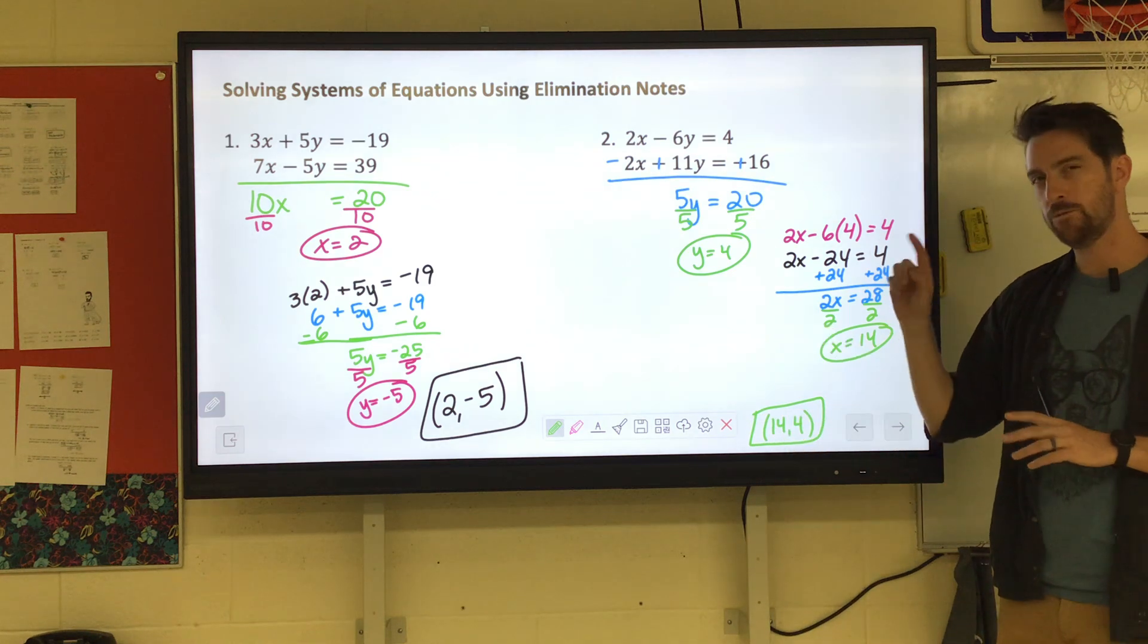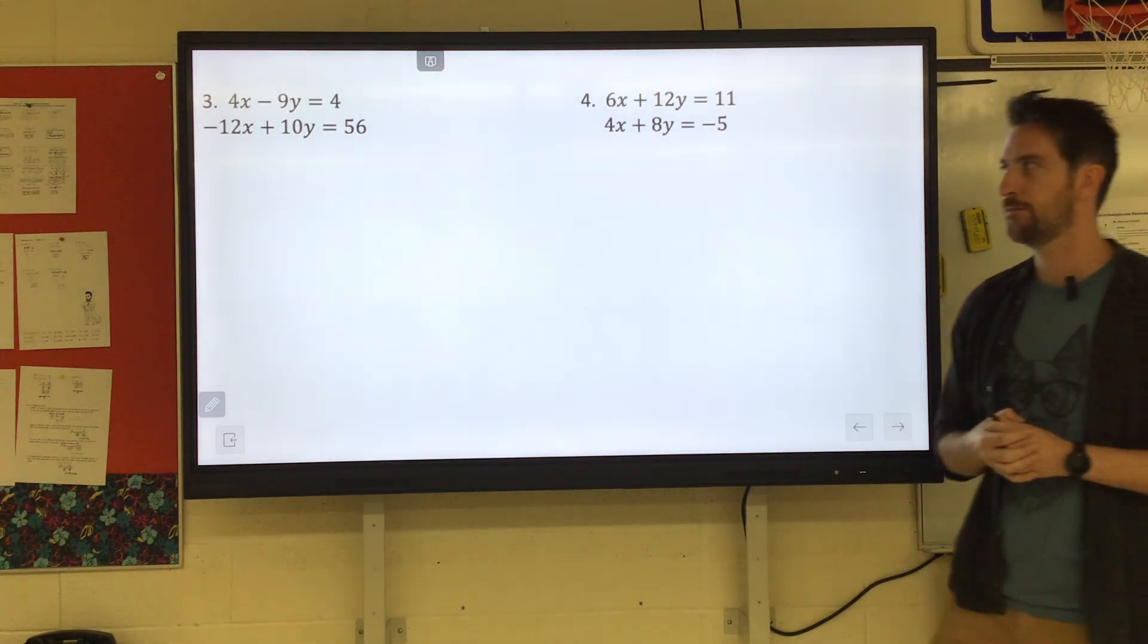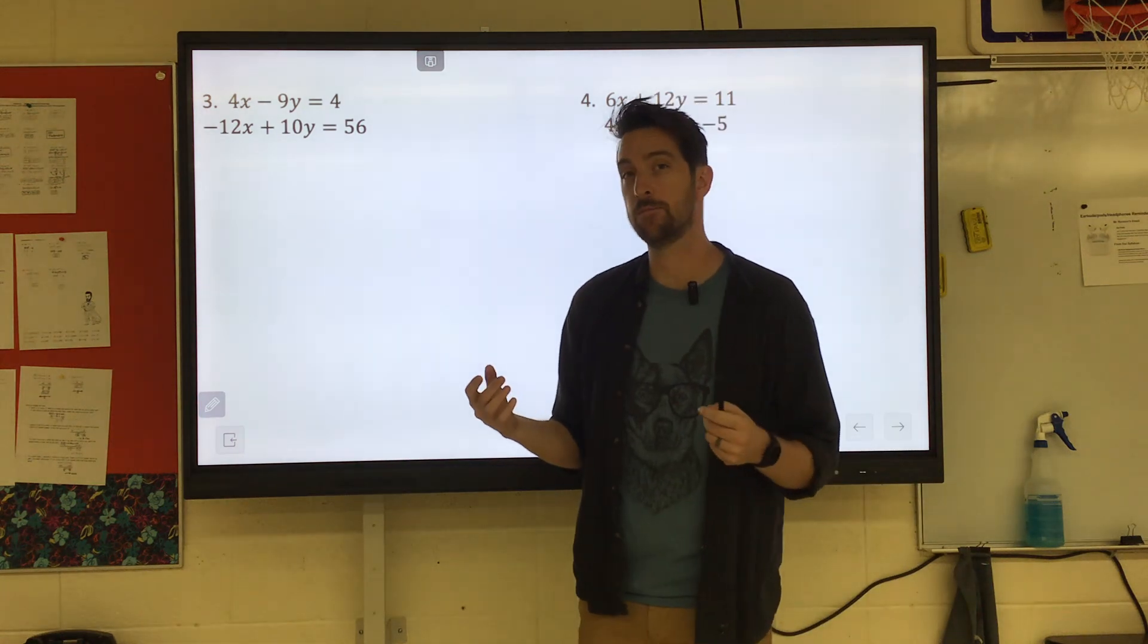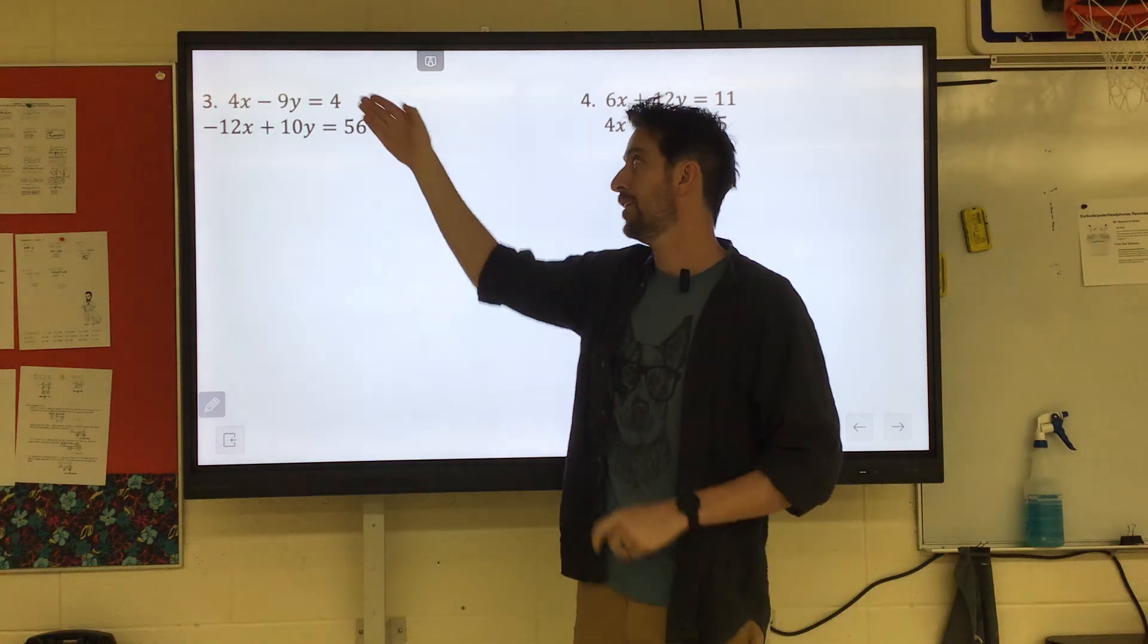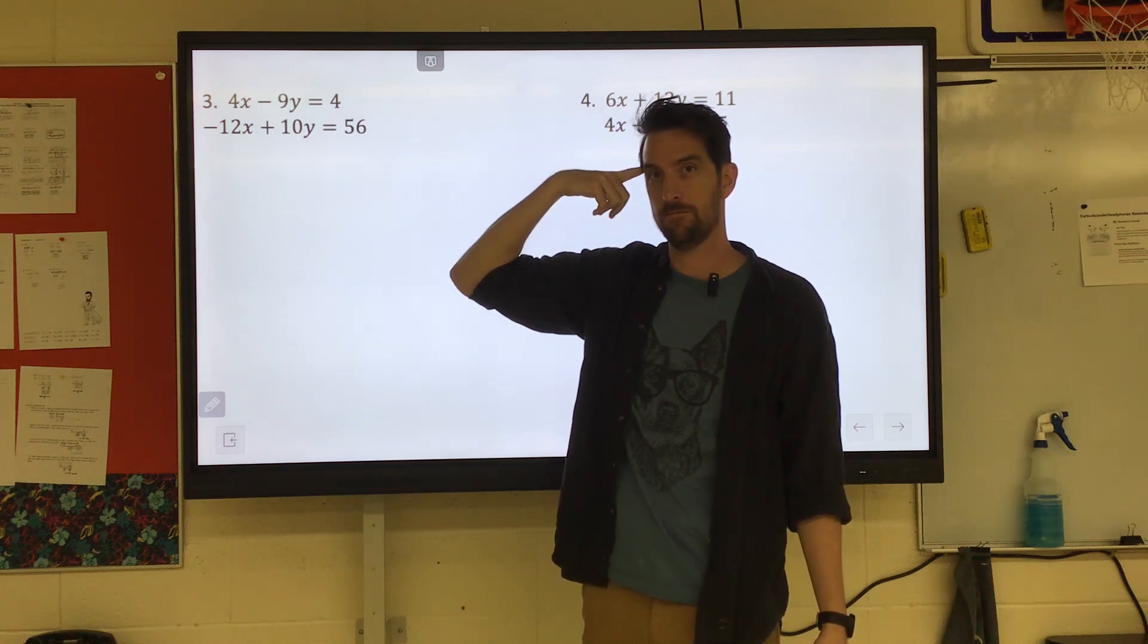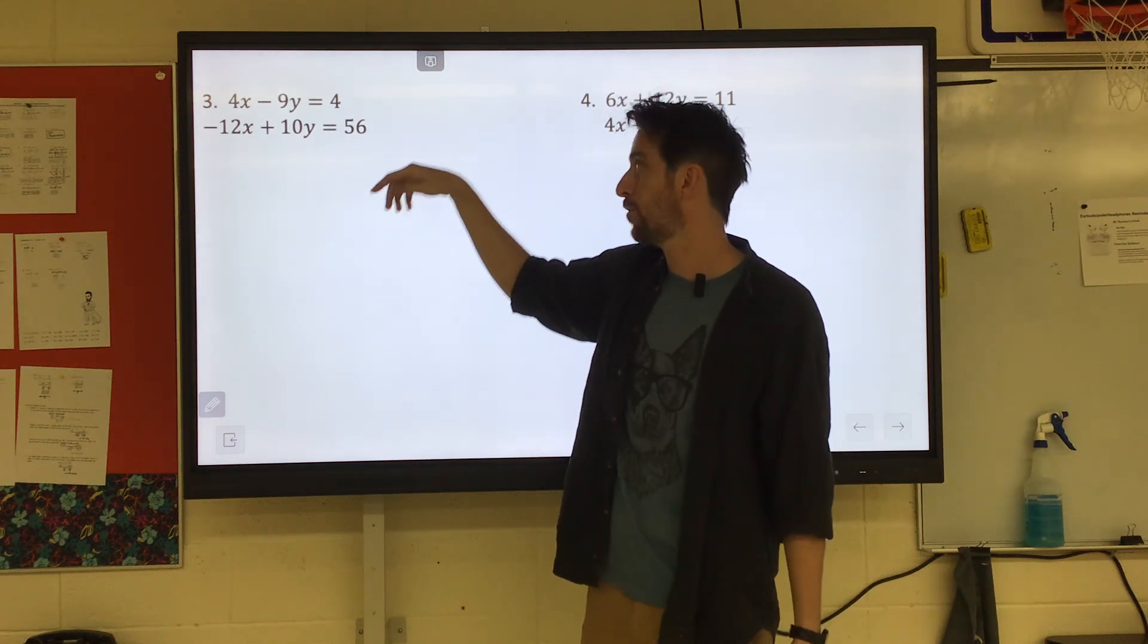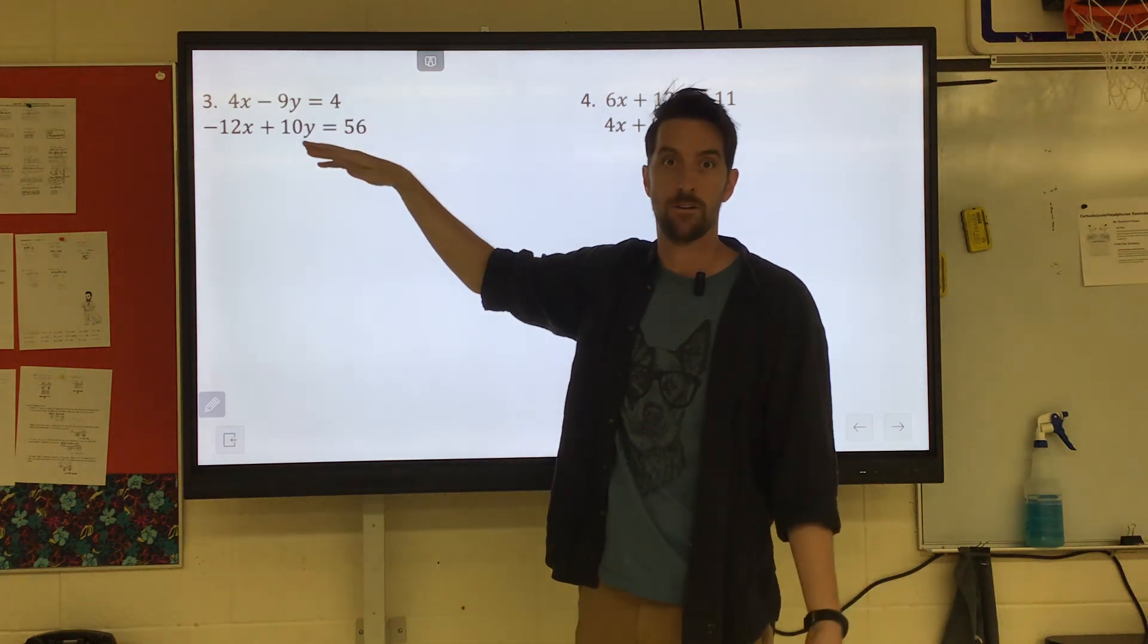You can always force them to match up. But remember, we do want one of them to be positive and one to be negative so they cancel out. So if you look at example three, neither one match up. They're not even the same numbers. But we can multiply. If you want, you can get the 9 and 10 to match up. But you'd have to multiply both of them. Like what's the number 9 and 10 could go into? 90. You could make them both 90Y. That would require you to multiply the top equation by 10, the bottom equation by 9. And that works. However, if you look at the X's, 4 can go into 12.